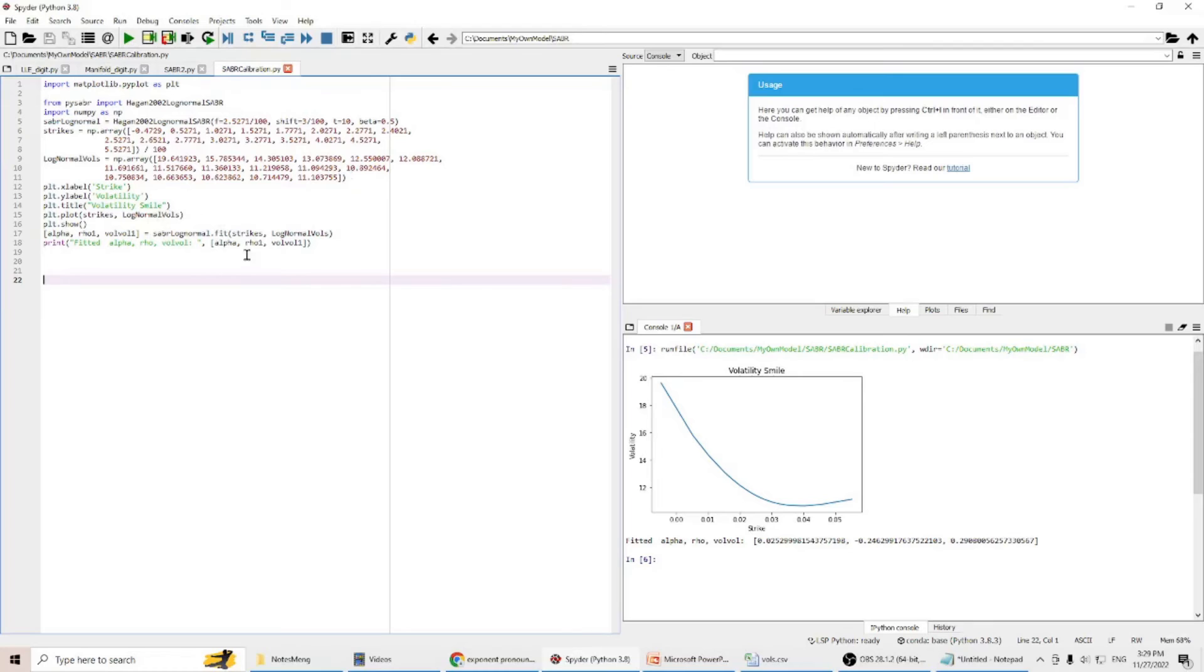After we call this function, we got alpha, rho, and volatility of volatility.